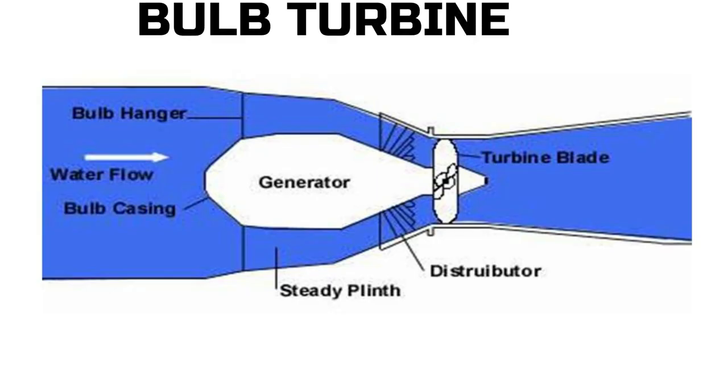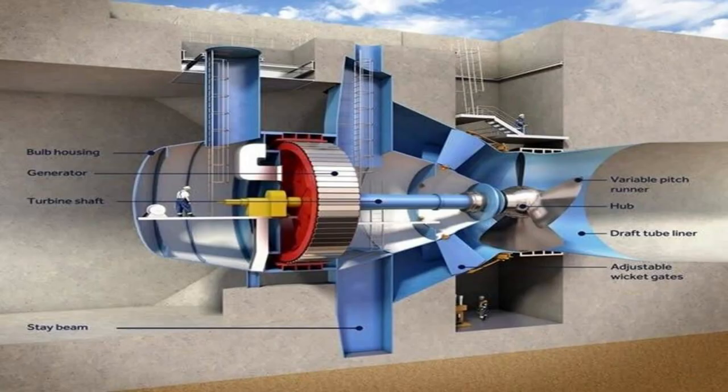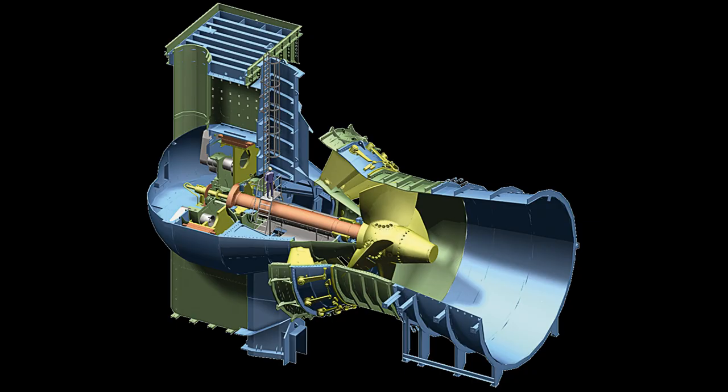Bulb turbine is another example of axial flow turbine with propeller blade design, used for extremely low heads mostly in tidal power harnessing plants. Bulb turbine is also called tubular turbine as it is placed inside a circular tube type structure.